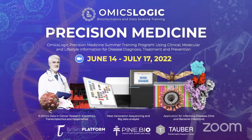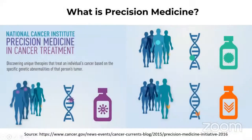So to begin with, what is precision medicine? Precision medicine is an emerging approach for disease treatment and prevention that takes into account individual variability in genes, environment, and lifestyle for each person. This approach will allow doctors and researchers to predict more accurately which treatment and prevention strategy for a particular disease will work in which group of people.